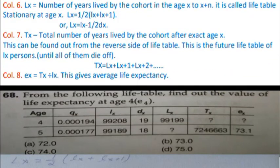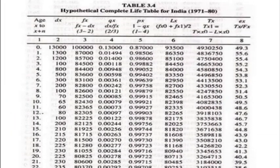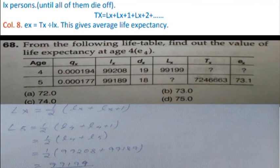ex, the life expectancy at age x, is calculated as ex = Tx / lx. This gives the average life expectancy. From the total life expectancy Tx and the number surviving lx, we get the average life expectancy.